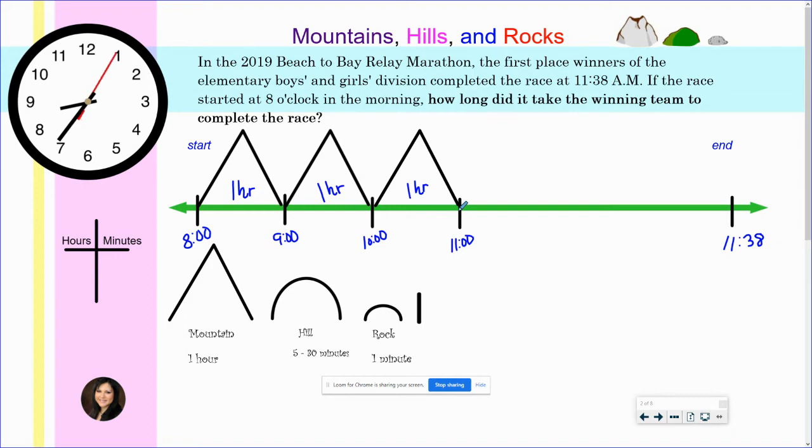Now let's take a look at what we have left. We have to get to 11:38. I am already at 11 o'clock. So if I use another mountain, that is going to put me at 12 o'clock. I am going to be over the 11:38. So I am going to go ahead and use a hill.